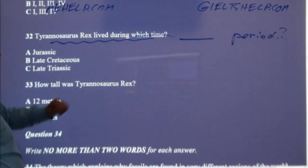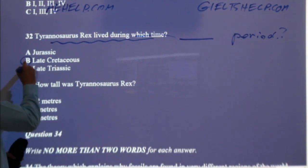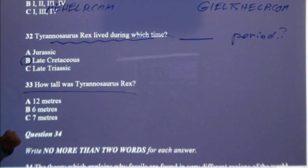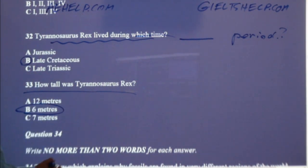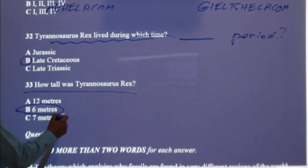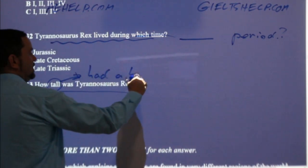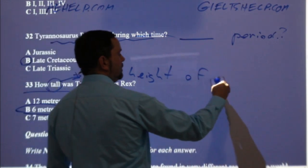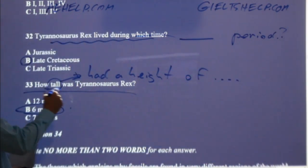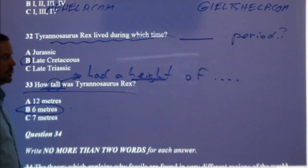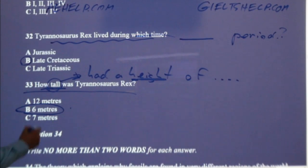Next one — how tall was the Tyrannosaurus Rex? 12 meters, 6 meters, or 7 meters? A, B, or C? For those of you answering B, you're correct — 6 metres. 12 would be absolutely massive. They don't use the word 'tall' in the audio; they use the word 'height.' Another way to say 'tall' is 'height' — that's what she said instead of the word 'tall.' They were 12 meters long — the professor said a length of 12 meters.